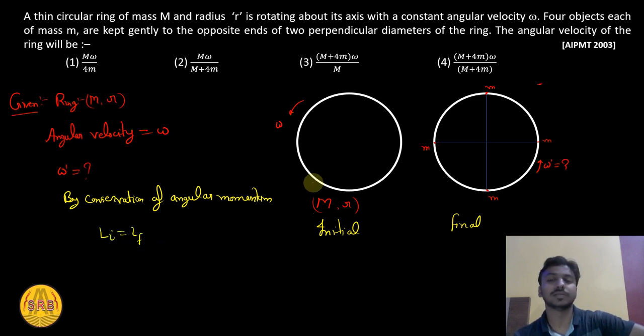Initial angular momentum L_i equals I omega. Final angular momentum equals I' omega'. The moment of inertia of the ring is Mr². The whole system will be Mr² plus 4mr².